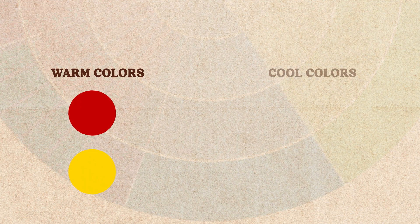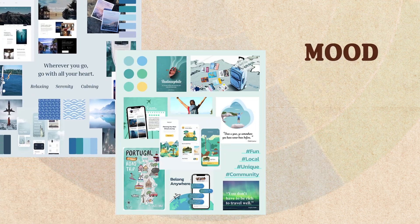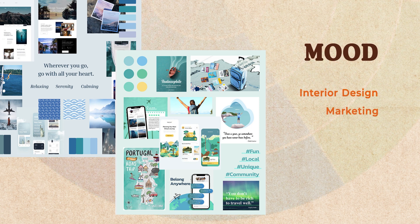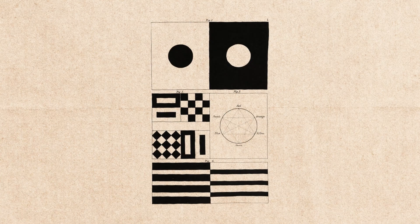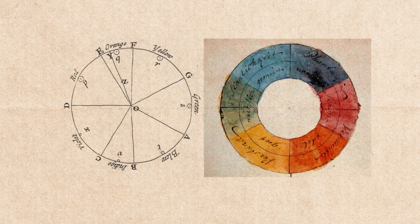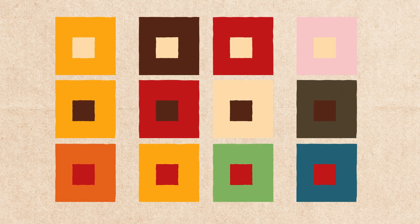Goethe noted how some colors appeared warm, like reds and yellows, while others seemed cool, like blues and greens. He also talked about how color affects mood — a perspective that is now key in fields like interior design, marketing, and color therapy. Goethe experimented with prisms, black and white patterns, different shades of gray, and different colored backgrounds, always observing how colors appear differently depending on their surroundings.